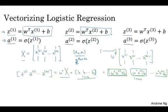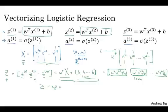So, just as X was what you obtained when you took your training examples and stacked them next to each other, stacked them horizontally, I'm going to define capital Z to be this, where you take the lowercase z's and stack them horizontally. Okay, so when you stack the lowercase x's corresponding to different training examples horizontally, you get this variable capital X. In the same way, when you take these lowercase z variables and stack them horizontally, you get this variable, which I'm going to denote by capital Z. And it turns out that in order to implement this, the numpy command is capital Z equals np.dot w.T, that's w transpose x, and then plus b.